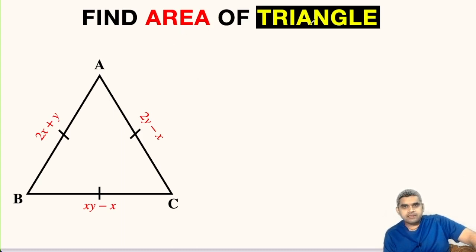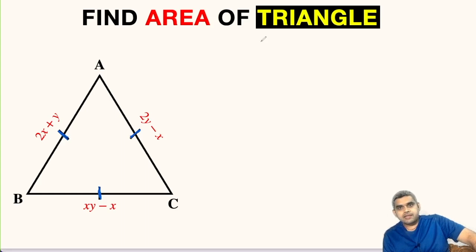In this question, we have to find the area of the triangle shown here. Triangle ABC is an equilateral triangle because it is given that all three sides are equal. The sides are not explicitly given; rather they are expressed in terms of two variables X and Y. Since it is an equilateral triangle, the area is given by the formula: root 3 divided by 4 times side squared.